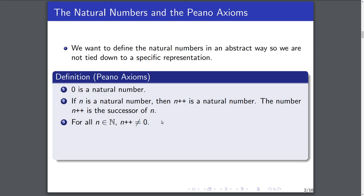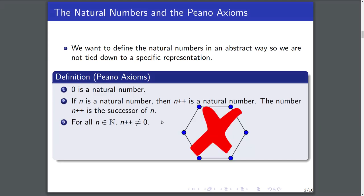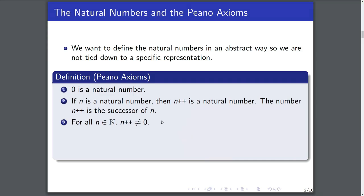The third axiom seems kind of confusing at first, but it says for all natural numbers, its successor cannot be 0. In other words, we cannot loop back around to 0. 0 has no predecessor — it is going to be the first natural number. Axiom 3 guarantees this.